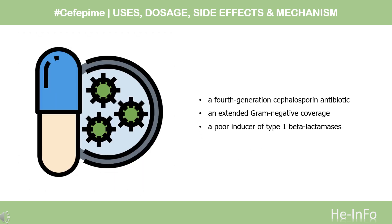Pharmacodynamics. Cefepime is a 4th generation cephalosporin antibiotic. It is active against gram-negative bacteria such as Enterobacter spp., Escherichia coli, Klebsiella pneumoniae, Proteus mirabilis, and Pseudomonas aeruginosa. And gram-positive bacteria such as Staphylococcus aureus (methicillin-susceptible isolates only), Streptococcus pneumoniae, Streptococcus pyogenes, and Viridans group Streptococci.